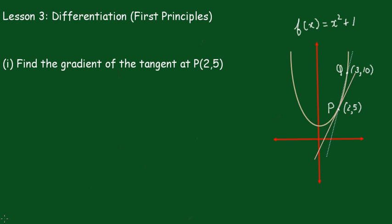In this lesson we're going to differentiate from first principles the function f(x) = x² + 1. First, I want to find the gradient of the tangent at point (2,5).